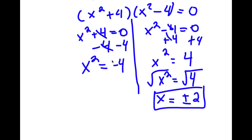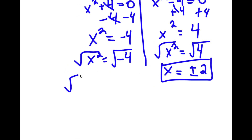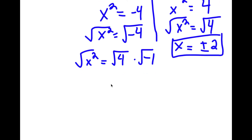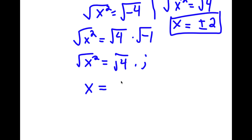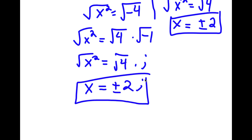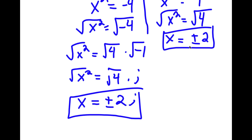For x squared equals negative 4, I take the square root of both sides. The square root of negative 4 I rewrite as the square root of 4 times the square root of negative 1. The square root of negative 1 is the imaginary number i, so I have the square root of 4 times i. The square root of x squared is x, and the square root of 4 is positive or negative 2. So x equals positive or negative 2i, and x equals positive or negative 2 are all four solutions.